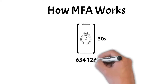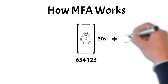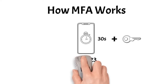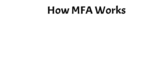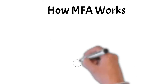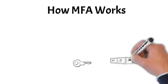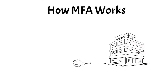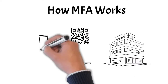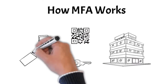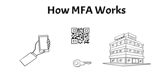That code is based on the current time plus a secret key. That secret key is created by the company or website where you want to log in, and is usually given to you by a QR code that your authenticator app scans. So you take a picture of the code with the app and you're ready to go.